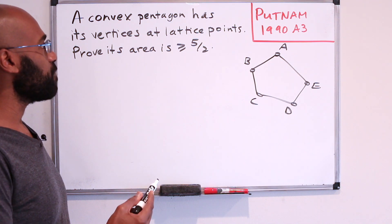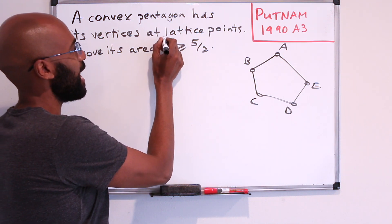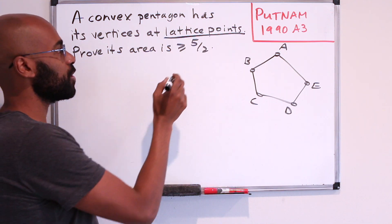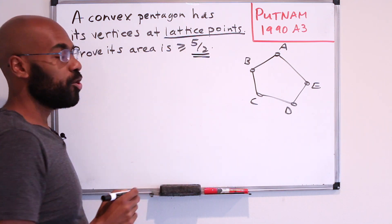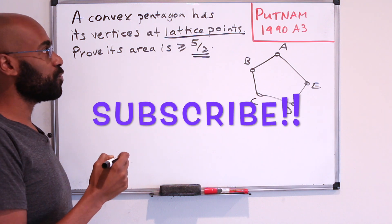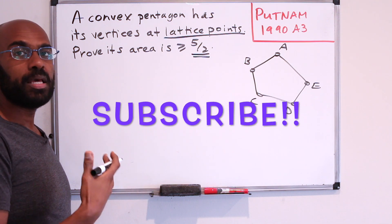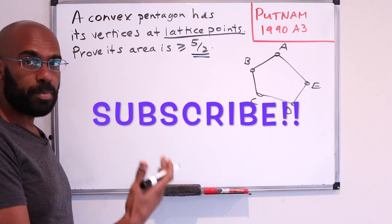So given that we have information about lattice points, and we're trying to conclude something about area, it would be great if we had some way to relate lattice points and area at all in a particular polygon.